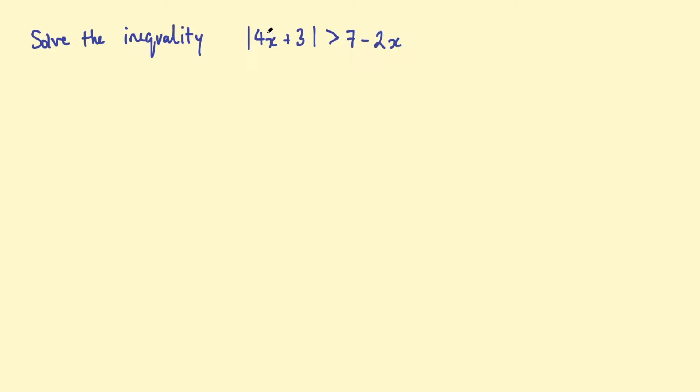This question says, solve the inequality, the absolute value of 4x plus 3 is greater than 7 take 2x.